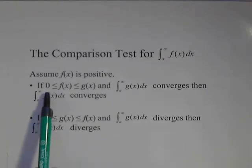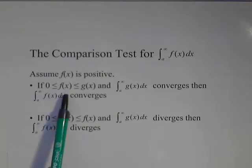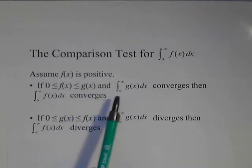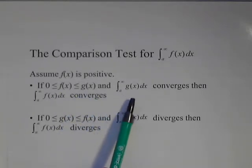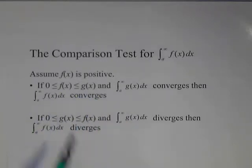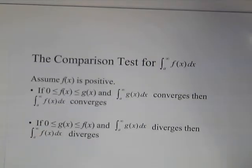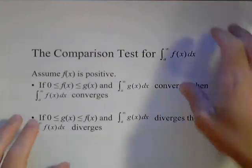And it says if f of x is greater than zero but less than g of x, then the integral from a to infinity of g of x converges. Then we can say that f of x converges. So first, let's look at that situation.